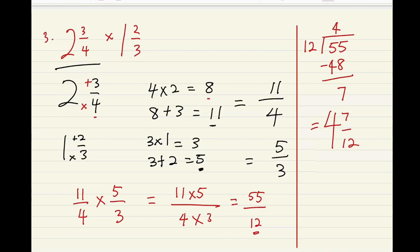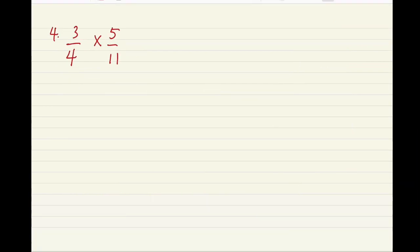This is your final answer. For the next problem, we have 3 out of 4 times 5 out of 11. It becomes 3 times 5 over 4 times 11. 3 times 5 is 15, and 4 times 11 is 44. We cannot divide this any way to make it into a lowest form. It's already in its reduced form.